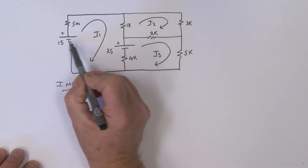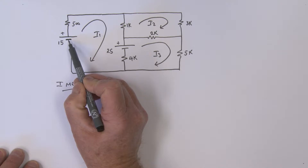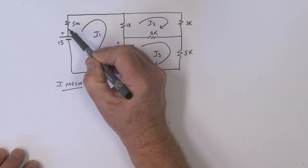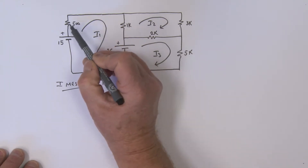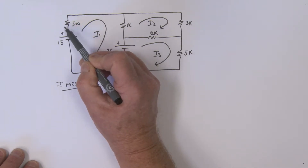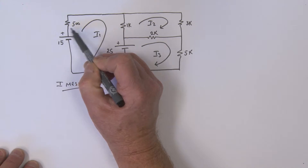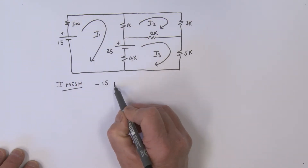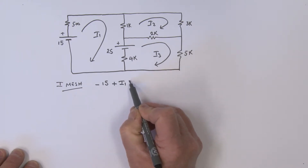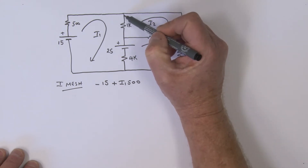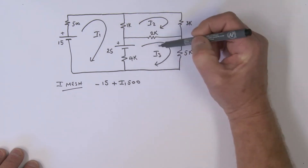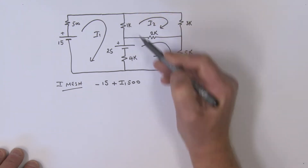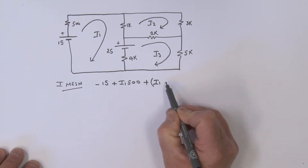Starting right here on the I1 mesh, we begin with a minus 15 for the voltage source. Coming across the next resistance, remember the mesh current is going in this direction, which defines a plus-minus voltage across that resistor. Since we're hitting the positive terminal first, we call that plus I1 times 500. The next component has a current I1 minus I2 flowing through it, and considering the polarity as plus-minus, we hit the plus first, so that is plus (I1 minus I2).